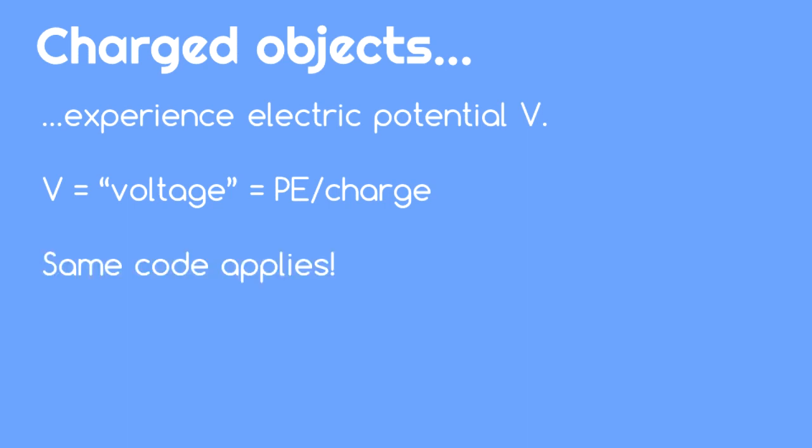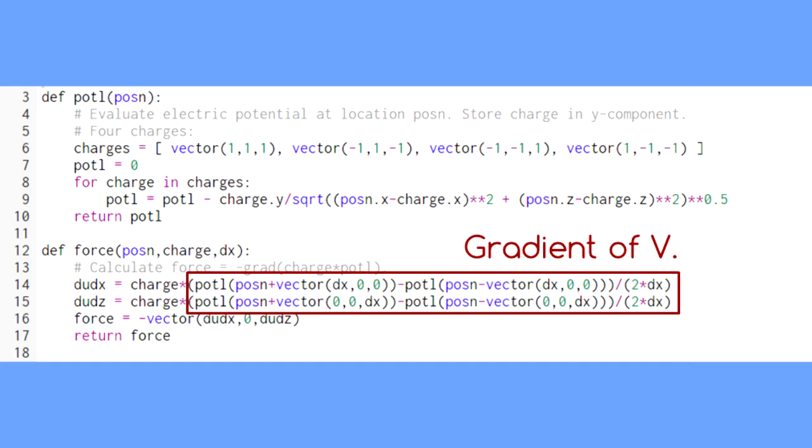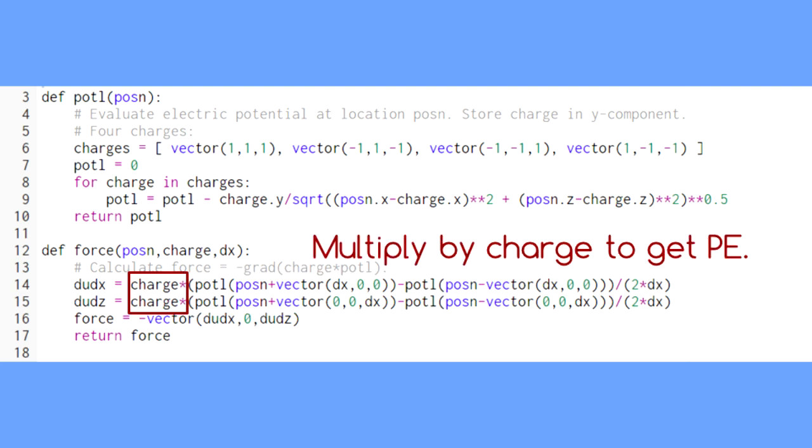So it's very easy to extend our potential energy code to instead work with electric potential. All we have to do is calculate the gradient of the electric potential using the same procedure as before, then multiply by the charge.